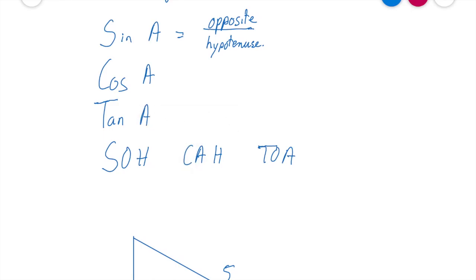My cos A is my CAH there. So that means cos equals the adjacent over the hypotenuse. So let's write that in here. So cos A equals the adjacent over my hypotenuse.